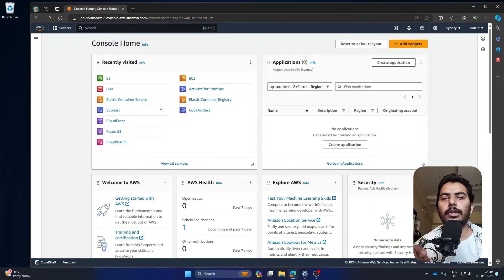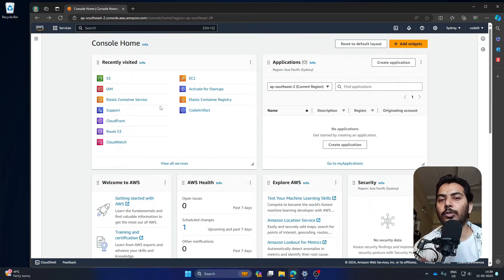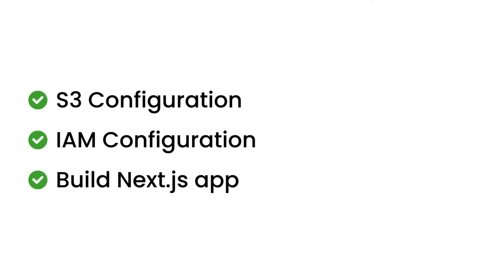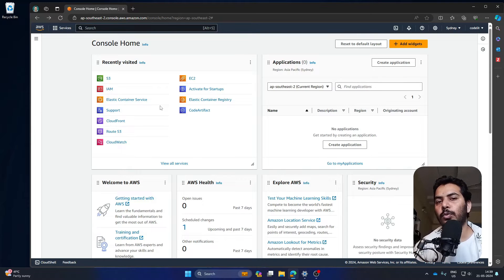In this video I'm going to show you how to configure your AWS S3 bucket to accept files from your Next.js application. I will show you the entire process: first we will configure the AWS S3 bucket, then we will create an IAM role so that the S3 bucket can be uploaded to using that particular user, and then we will configure a Next.js application to upload files to the S3 bucket.